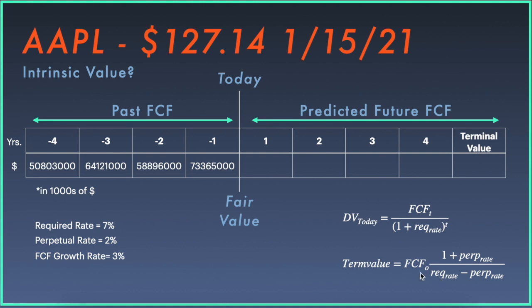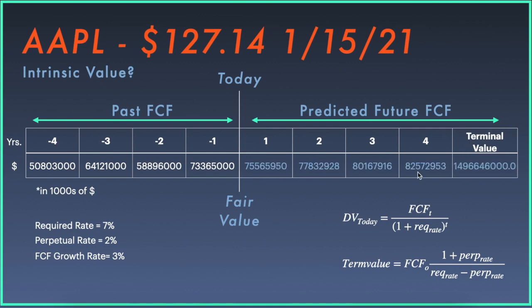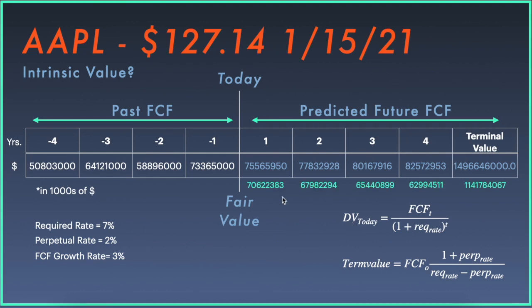We then discount the terminal value back to today's price using the same discounting formula. For years one through four, we used a free cash flow growth rate of three percent applied to the most recent cash flow number. For the terminal value, we use the most recent free cash flow number along with the required rate and perpetual rate. Then we take each of these values — years one through four plus the terminal value — discount them back to today, sum them up, and divide by the number of shares.